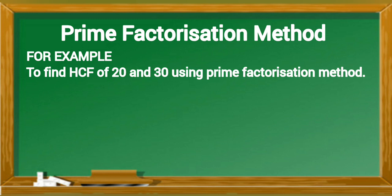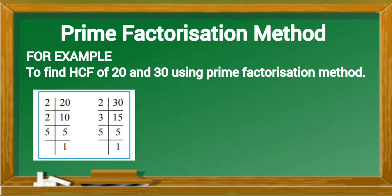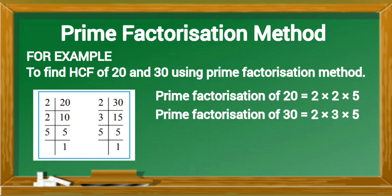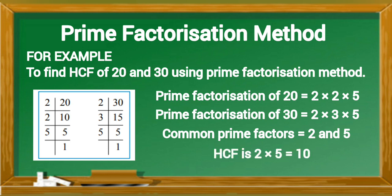For example, find HCF of 20 and 30 using prime factorization method. Prime factorization of 20 equals 2 into 2 into 5. Prime factorization of 30 equals 2 into 3 into 5. Common prime factors equals 2 and 5. So, HCF is 2 into 5 equals 10.